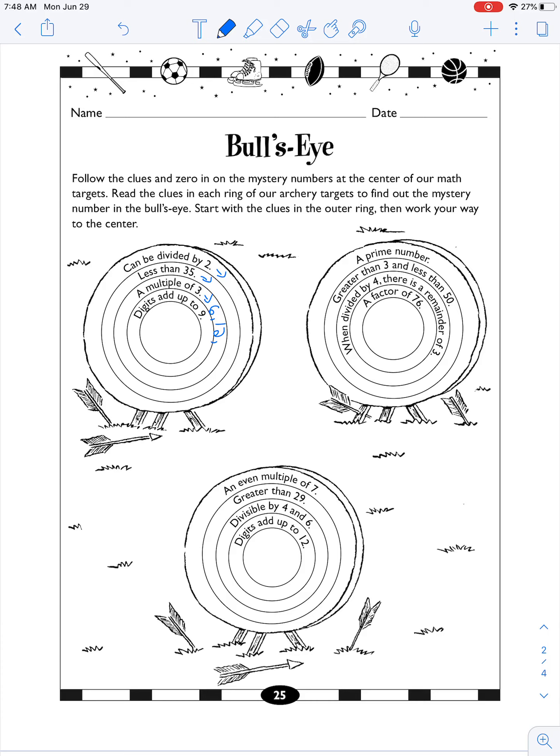And then we have 15, but is 15 divided by 2? No. Then we have 18, okay that works. Then we would have 21, but 21 cannot divide by 2. And then we would have 24. 24, okay that would work. Yeah, let's stop there for now. And then digits add up to 9. All right, well this one works, right? 18.